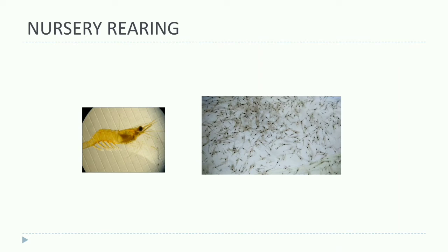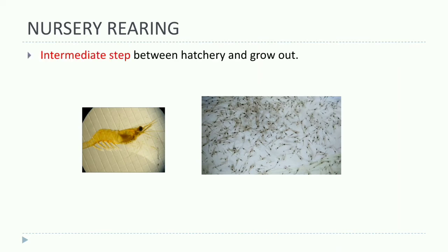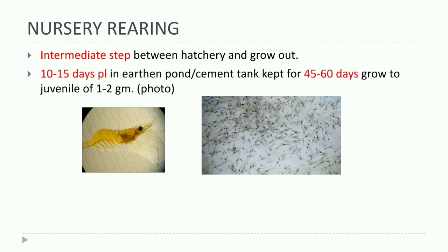Nursery rearing is the intermediate step between hatchery and grow-out. Post-larvae (PL) of 10 to 15 days old are kept in earthen ponds or cement tanks for 45 to 60 days, where they grow to juveniles of 1 to 2 grams.